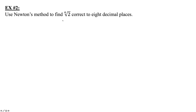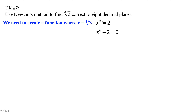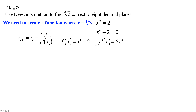Example: Use Newton's method to find the sixth root of 2, correct to eight decimal places. First create a function: set x to the sixth power minus 2 equals 0, so f(x) equals x to the sixth minus 2, and f'(x) equals 6x to the fifth. Store f(x) into y1 and f'(x) into y2. The closest integer near the sixth root of 2 is the sixth root of 1, so start with x sub 1 equal to 1.